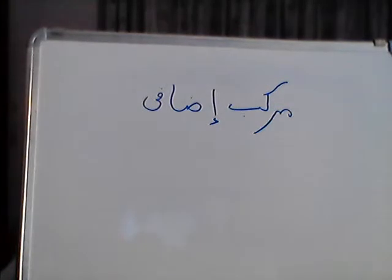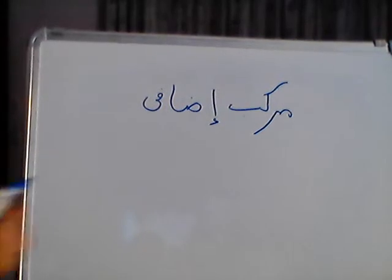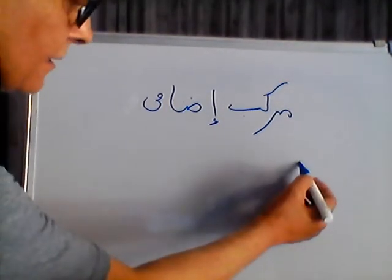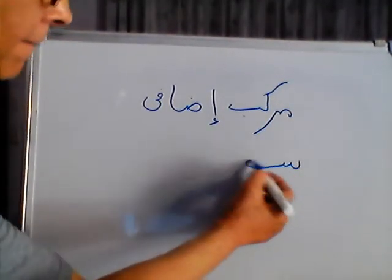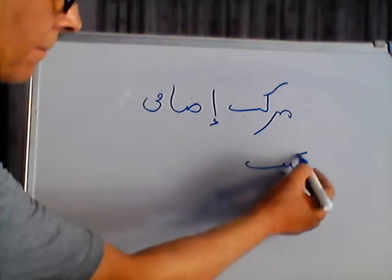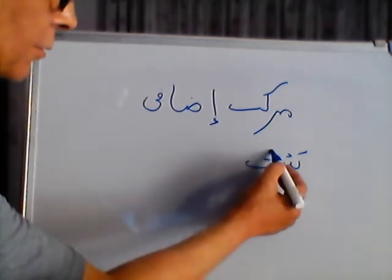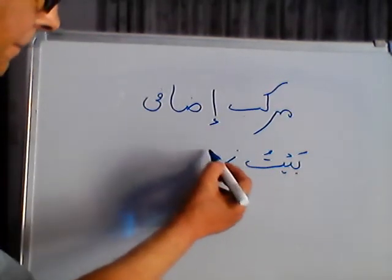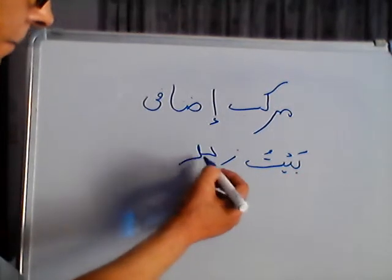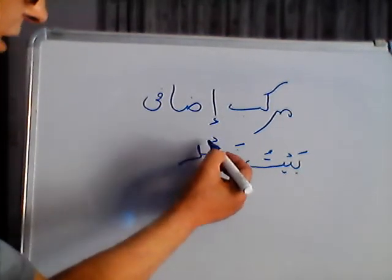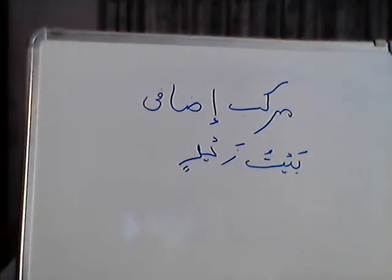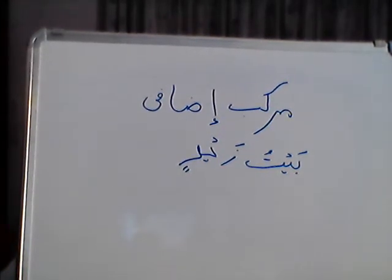Murakkab Izaafi is made by joining two nouns. For example, 'Baitu Zaydin' — meaning 'the house of Zayd.' In this construction, Bait is the Muzaf and Zayd is the Muzaf Ilay.